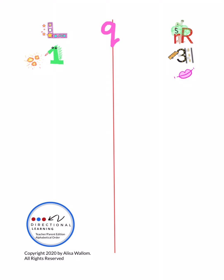The next letter to make is our red reptile tree: 'rah, rah, rah.' Then guess who slithers down the tree? It's Slimy the snake — he slides on down. To make Slimy the snake, we make the cat and then an upside-down cat: 'ss, ss, ss.' Remember, this is the red reptile tree.